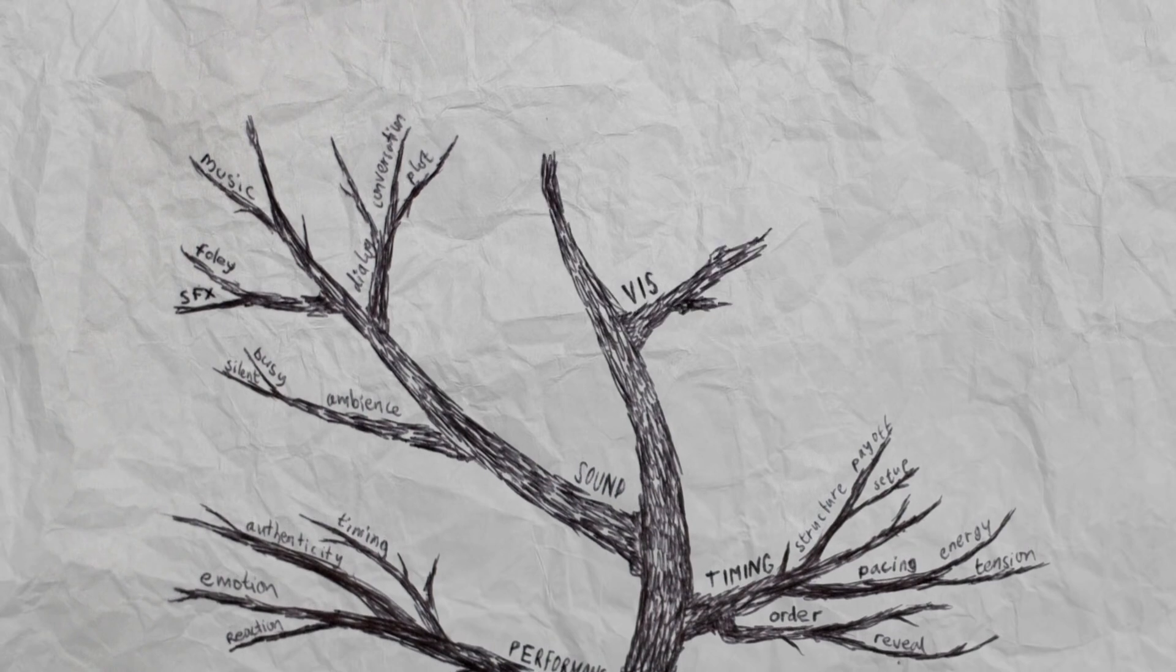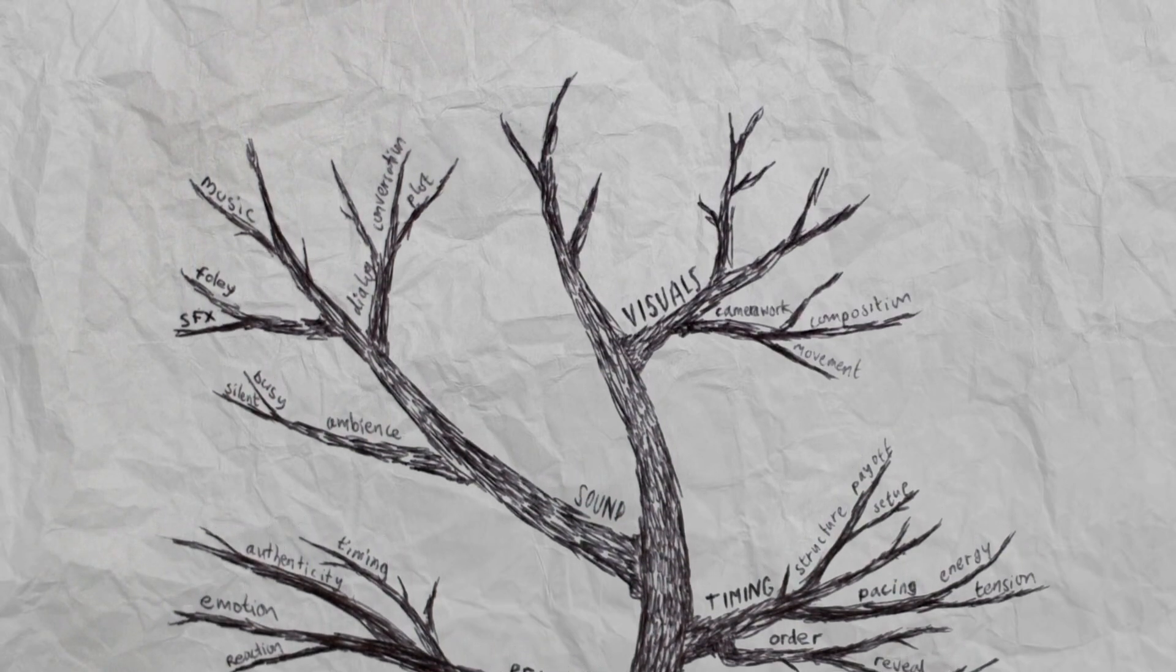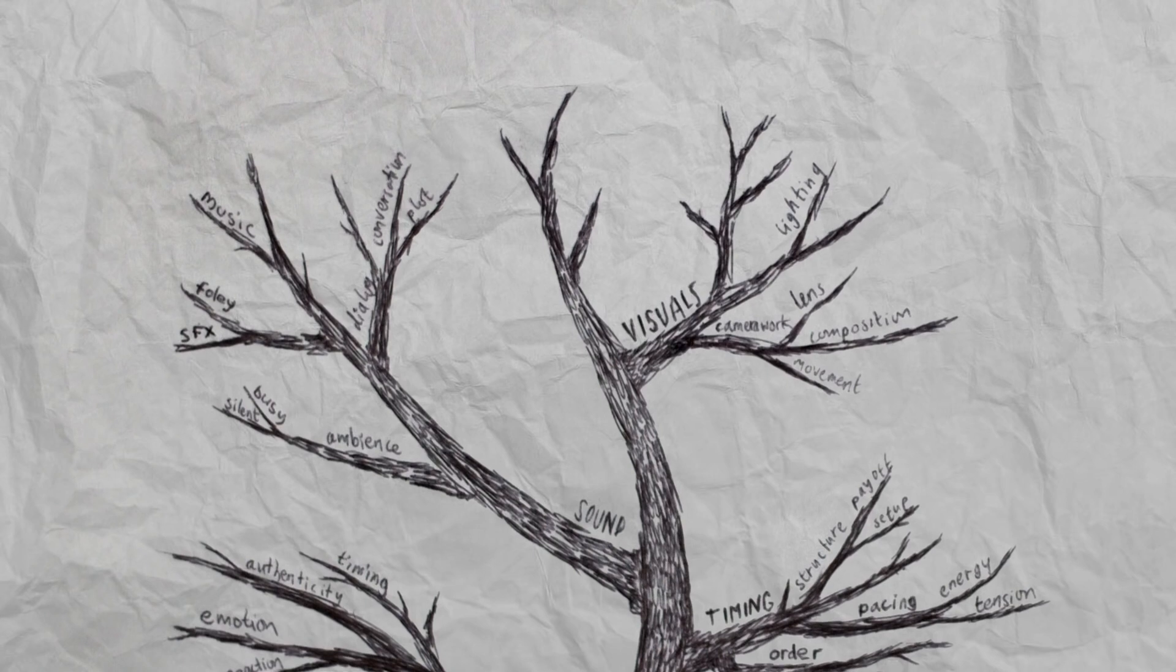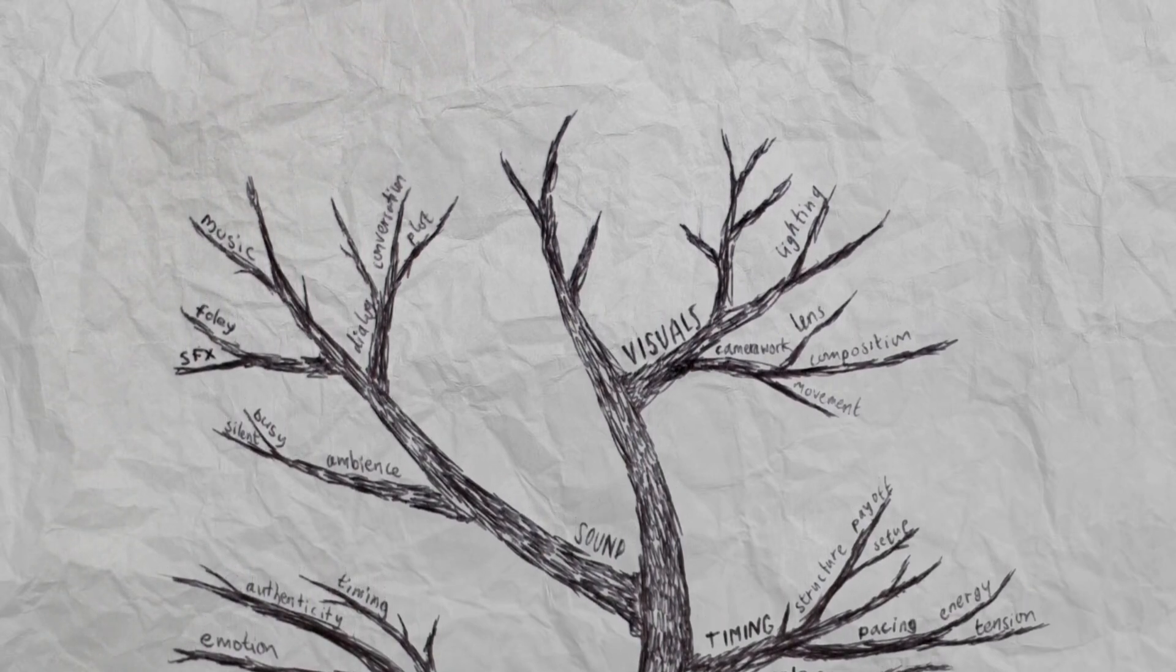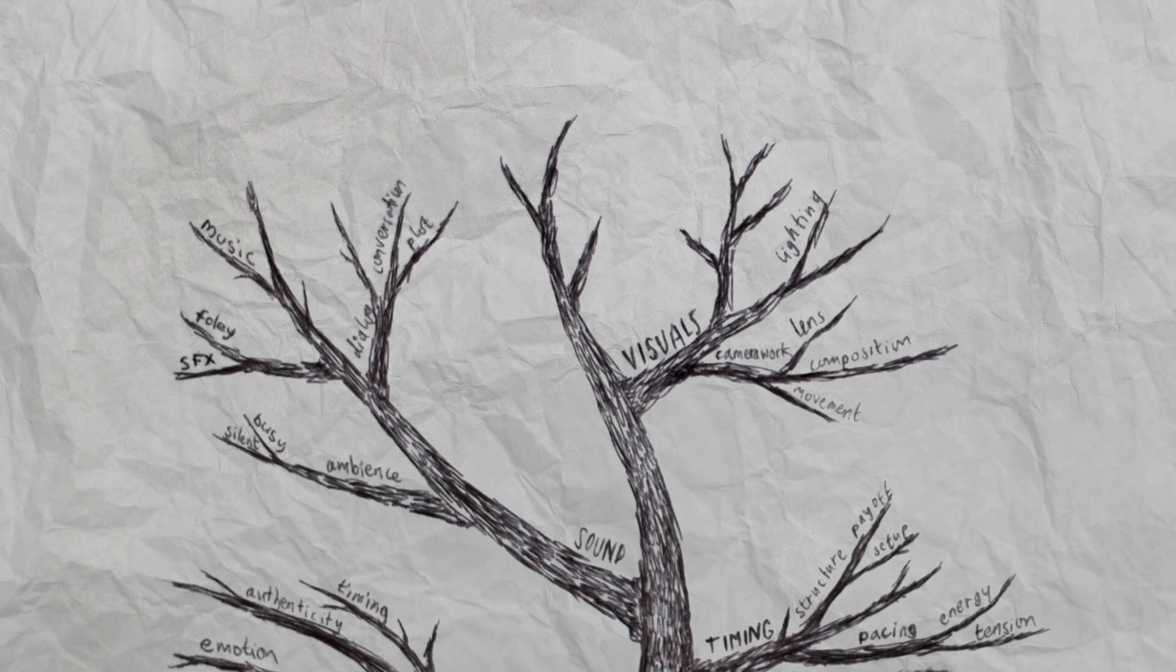And then there's the visuals. How we move the camera, how we choose to position it, and the lenses we use. Lighting is also part of the aesthetics, from dark, contrasty looks, to beautiful soft images, and everything in between.